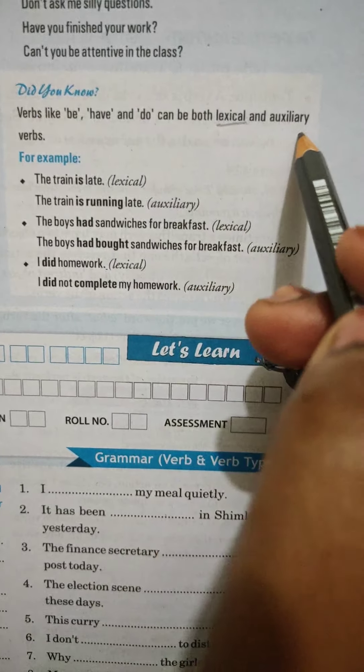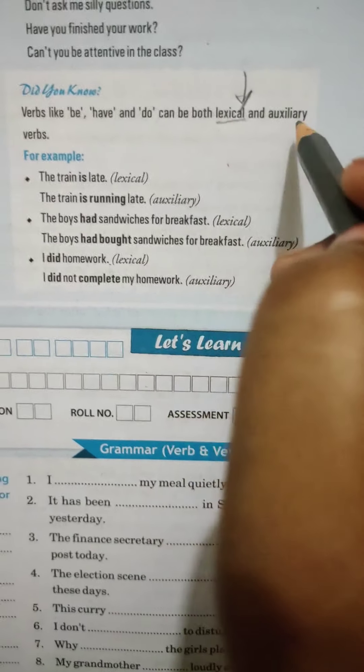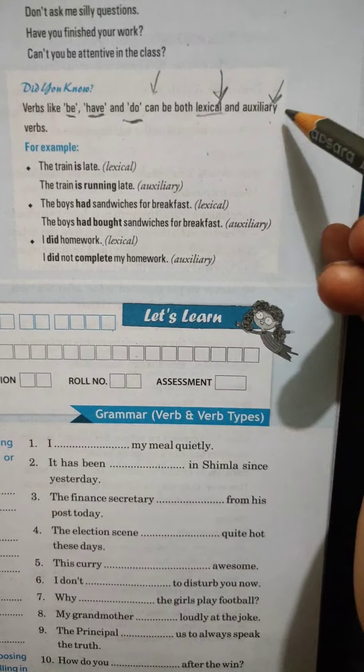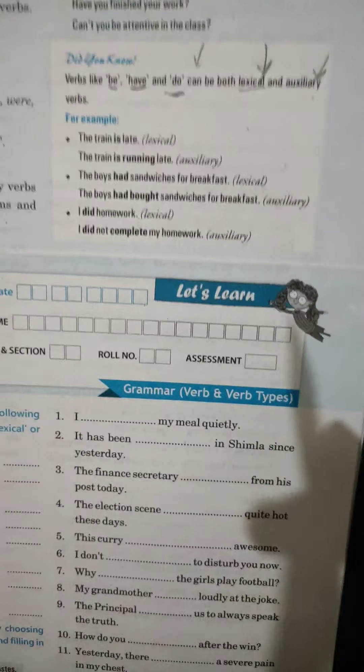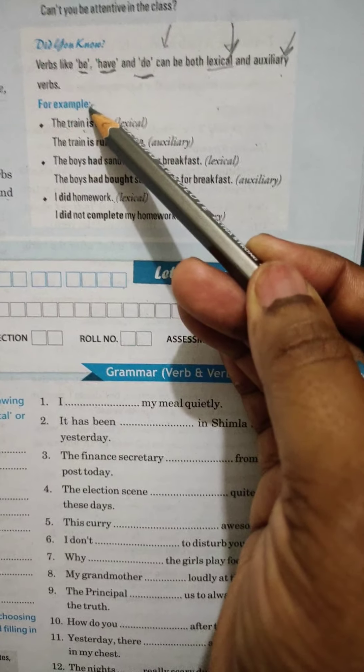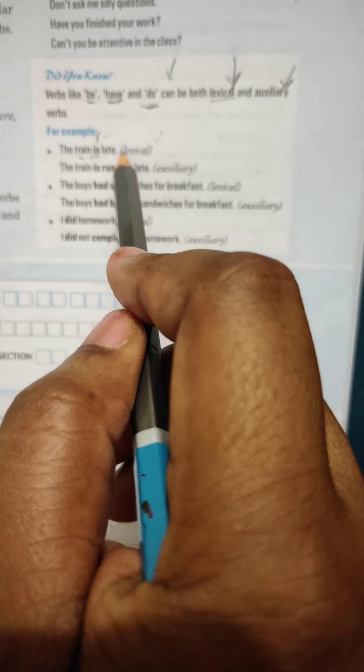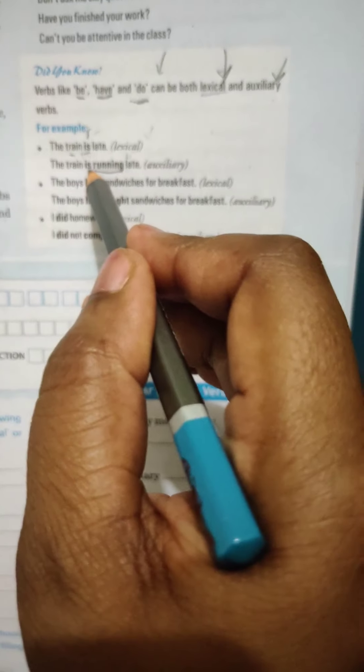So, let us see here what is written in this box. Did you know verbs like be, have, and do can be both lexical and auxiliary? How can this be? Lexical is a main verb and auxiliary is a helping verb. Now, this statement says, these be forms and have and do, these can be used as a main verb also and lexical and auxiliary verb, both we can use. Let us see the example. The train is late. See, this is the verb here and the train is not doing any action, but what is the role of is here? It is done as lexical verb here. The main verb of this sentence is is. You cannot say the train late.